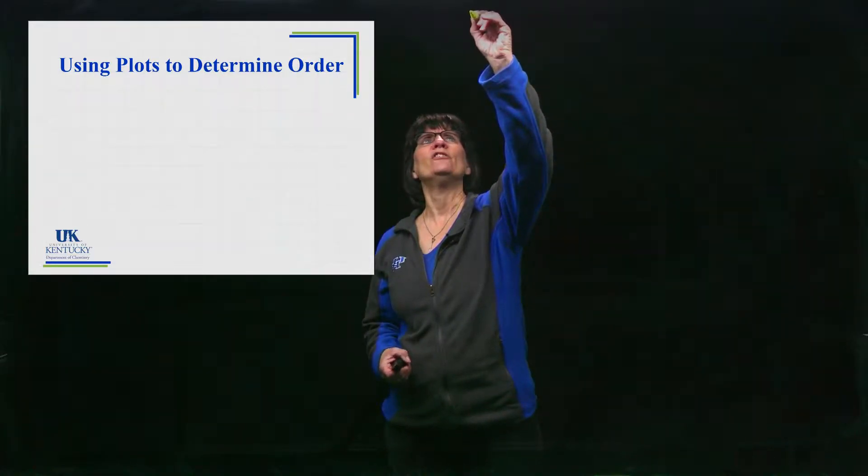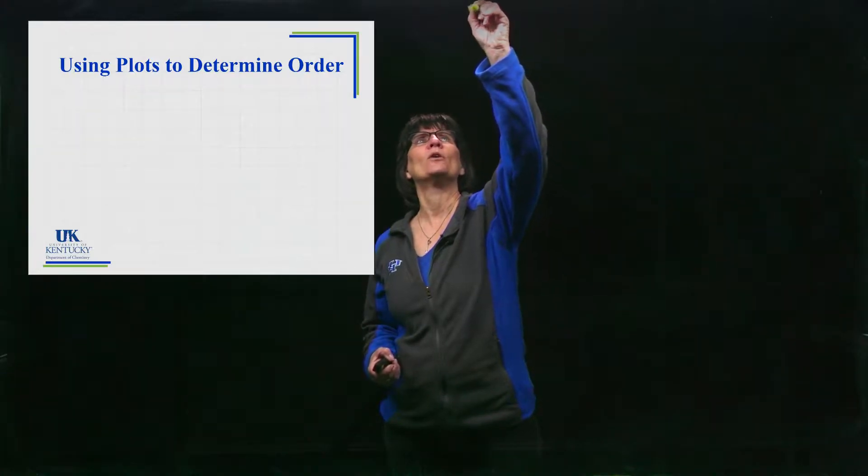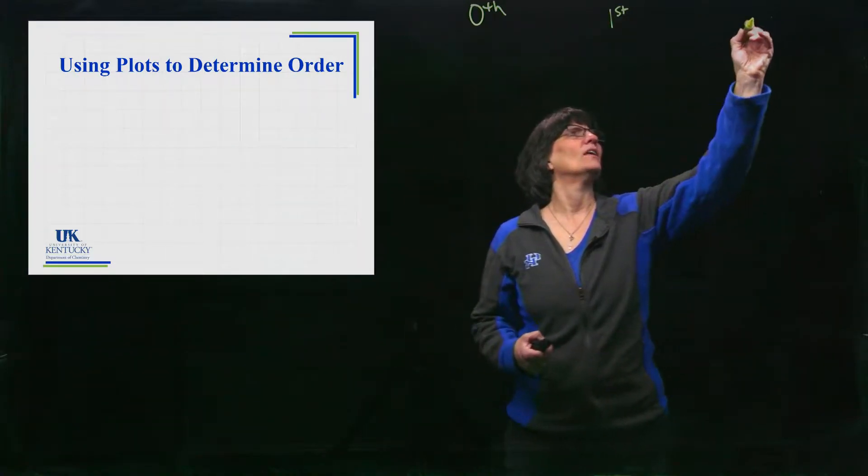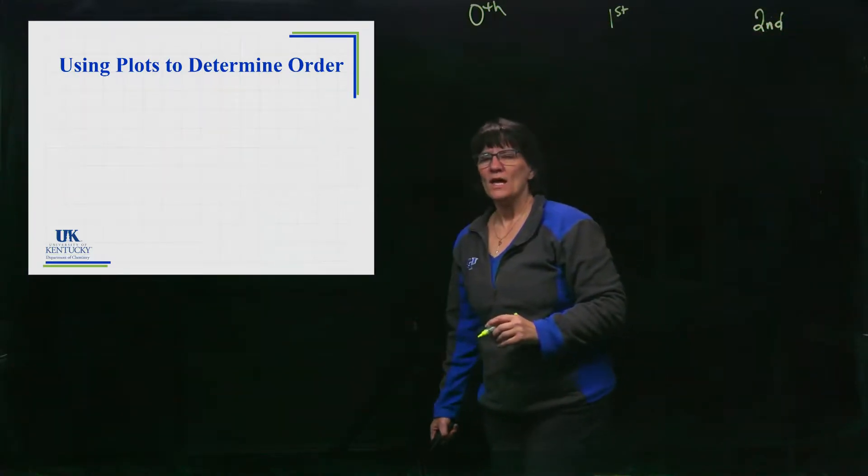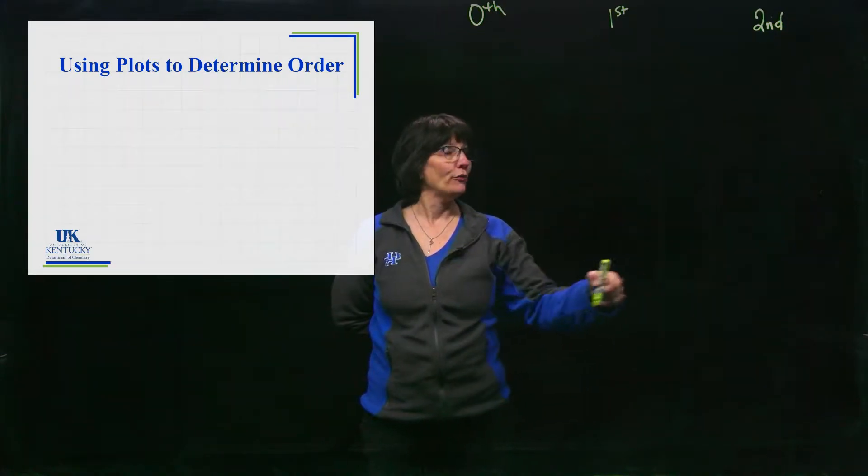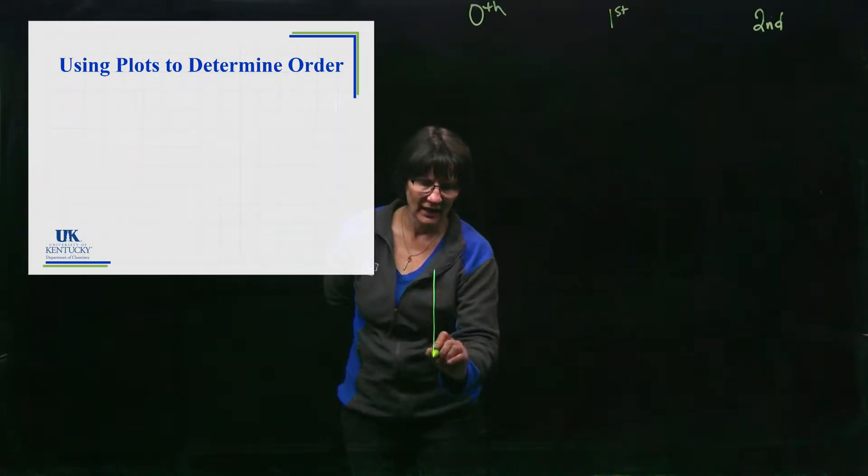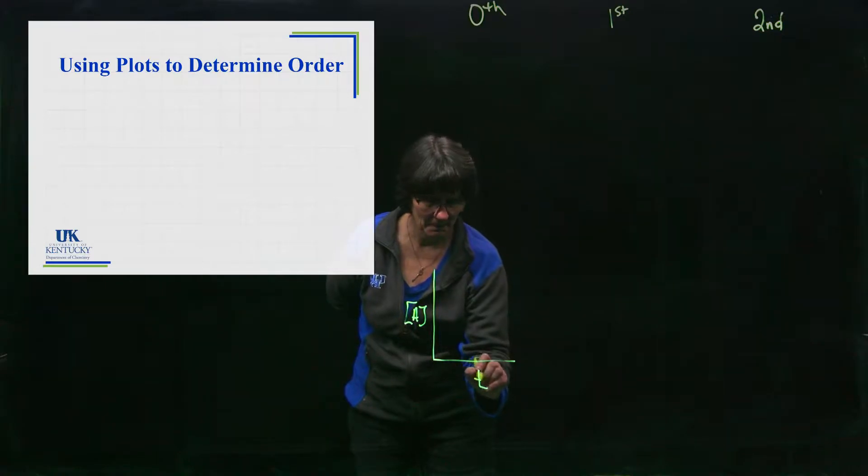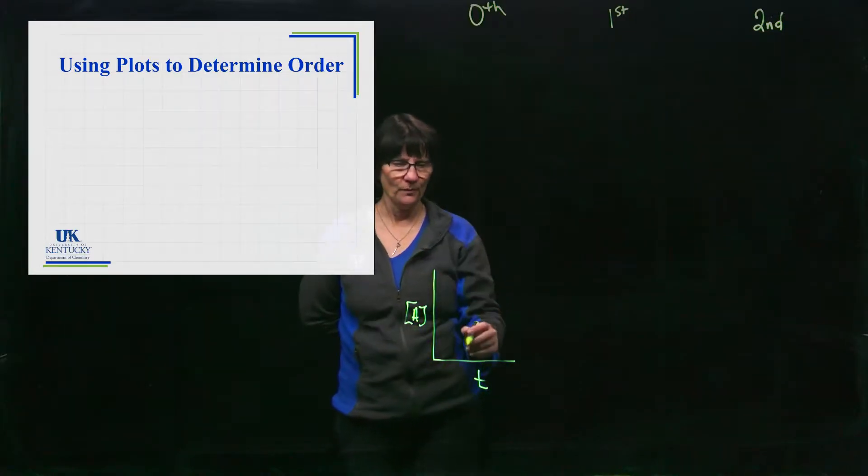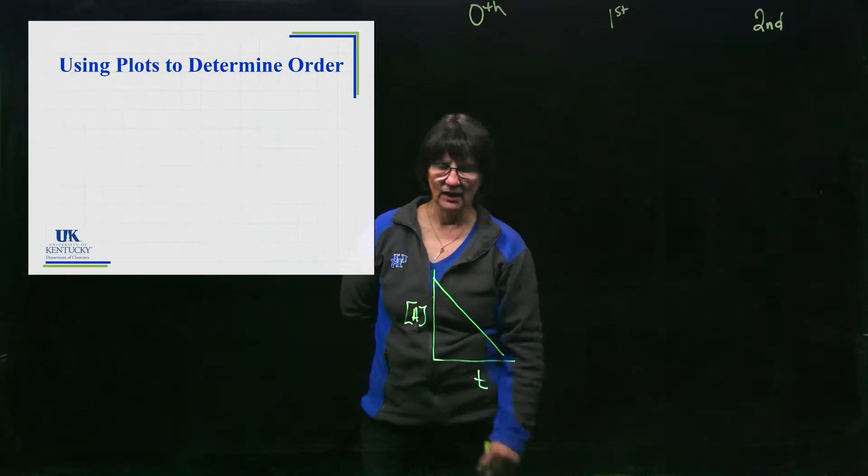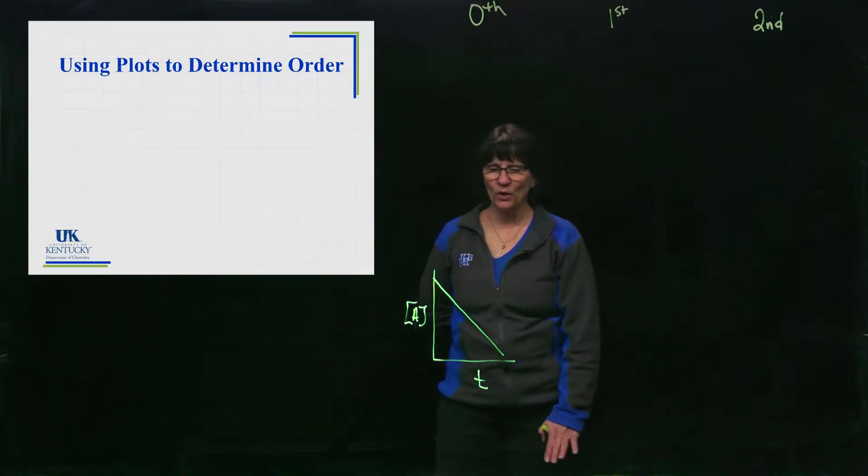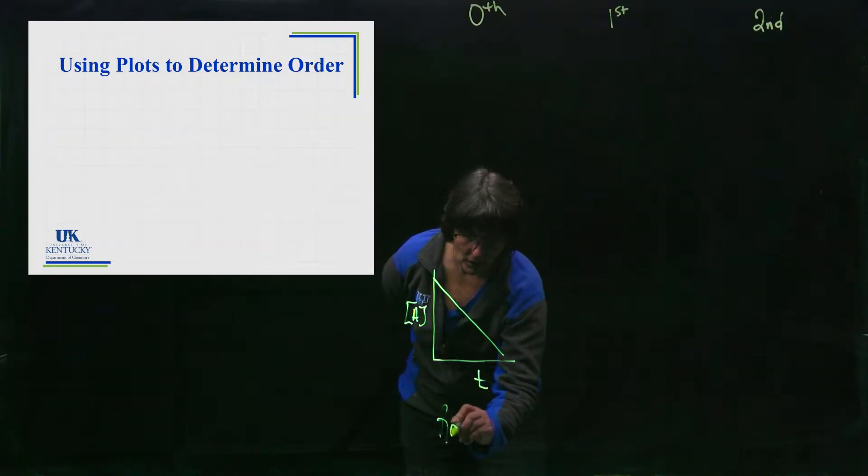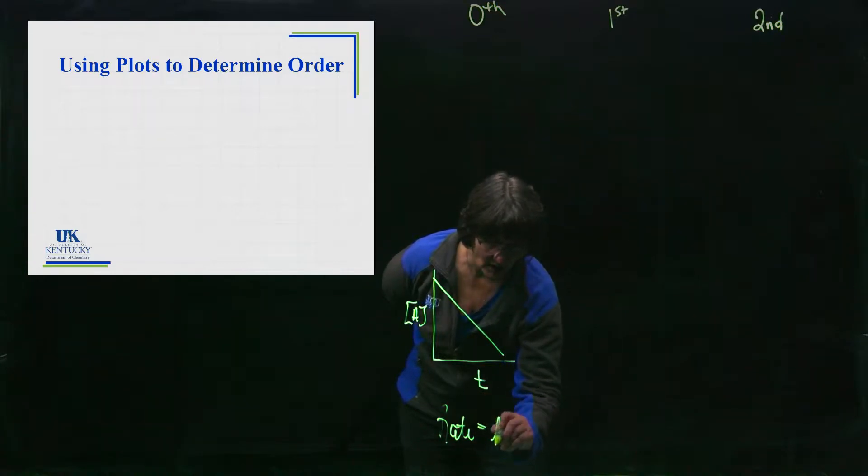Let's start with, well I'll put them in order of numbers: zero, first, and second. Down here we're going to do a plot in all three cases of what it would look like if it were a plot of concentration versus time. If it's zeroth order, it is a nice straight line already, and that is when the rate is a constant.